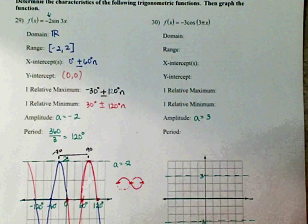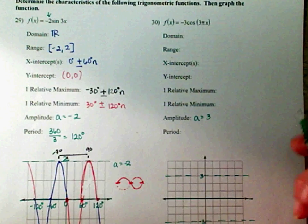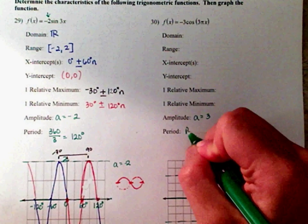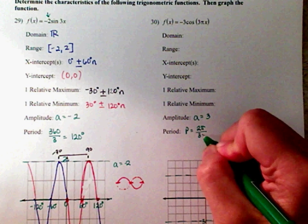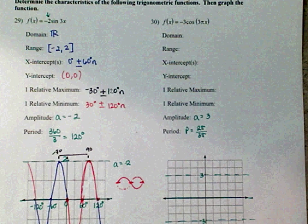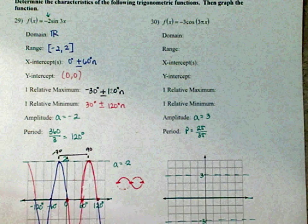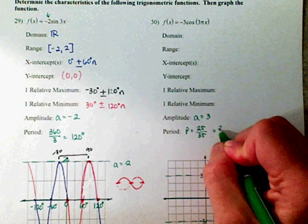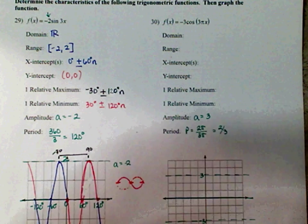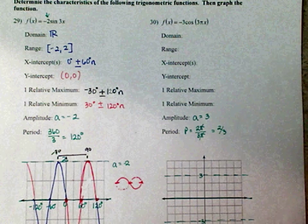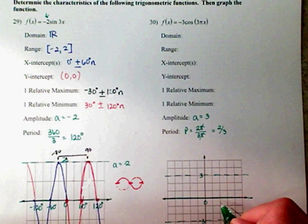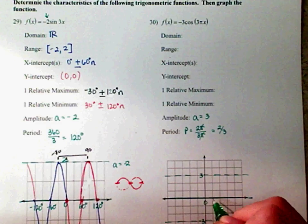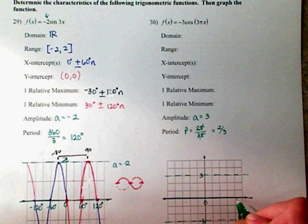And your period is 2 pi over b. And what is b? 3 pi. Here we go. So, this is the same thing as 2 thirds. Because the pi cancels out. So, here you have 0. 1 third. Here we go. 1, 2, 3, 4. 2 thirds. 1, 2, 3, 4. Negative 2 thirds.